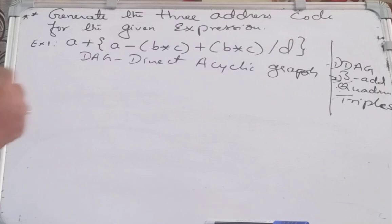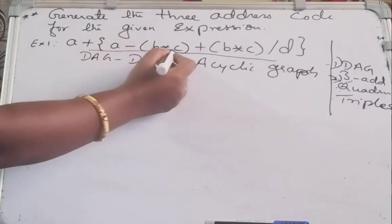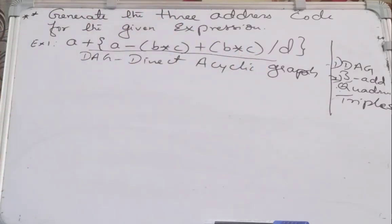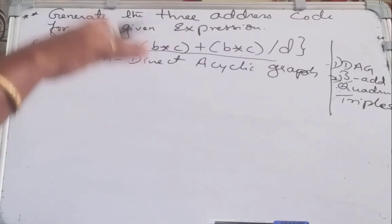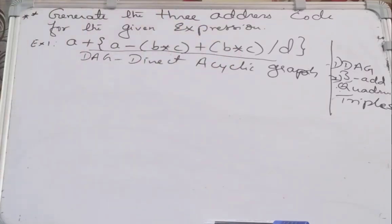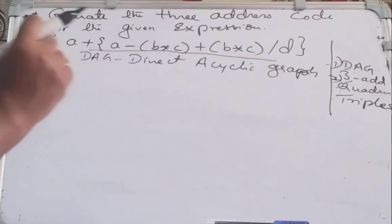Now if you see this DAG here — see this expression: in the brackets you have A minus B star C, and B star C. Here the expression B star C is repeated. Always you have to construct the DAG from bottom-most to the top. Here we have A plus followed by this instruction. In the DAG a node can have more than one parent — an intermediate node can have more than one parent. The DAG is a compressed form of the syntax tree.